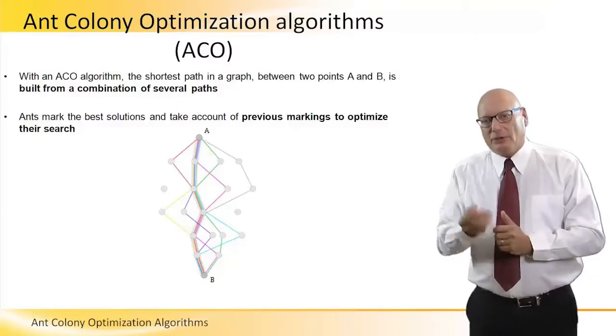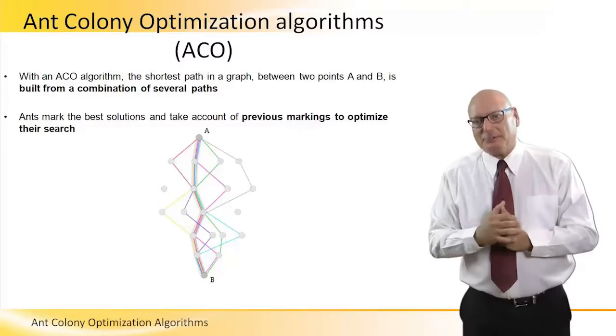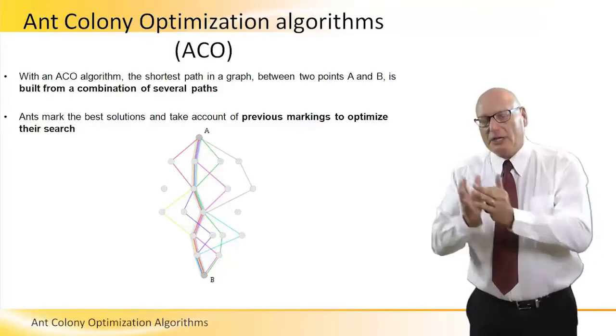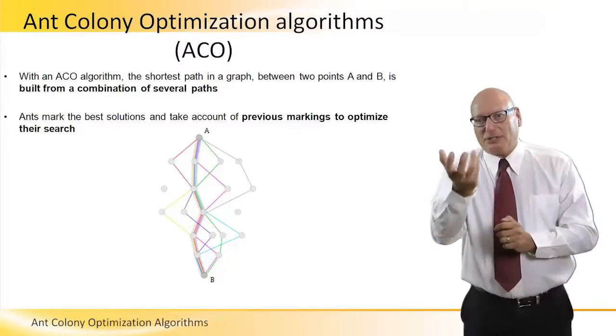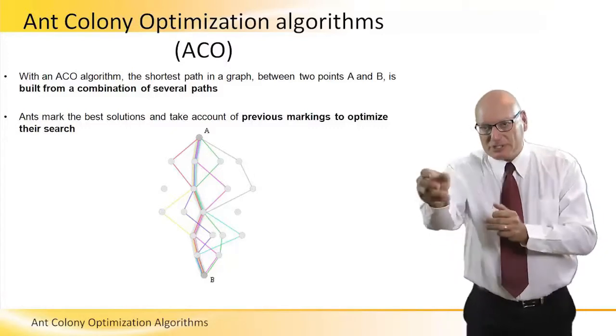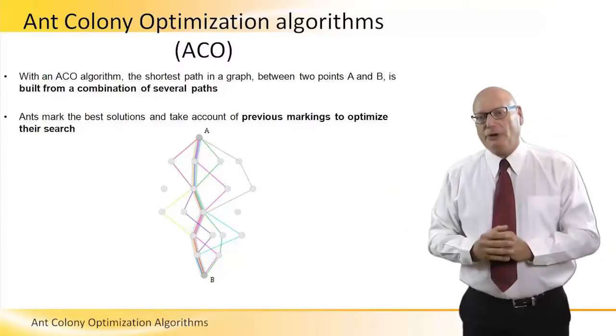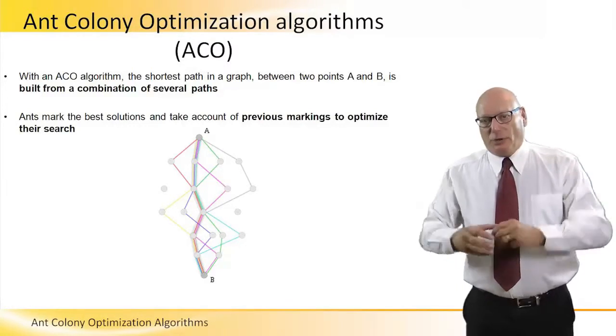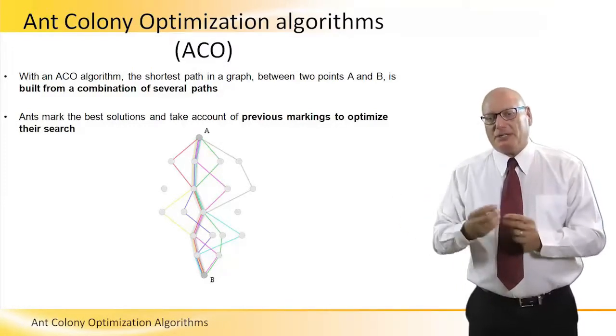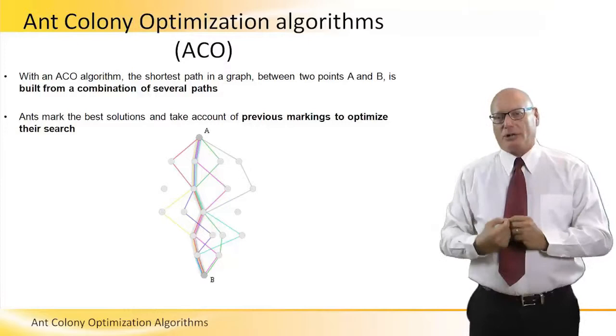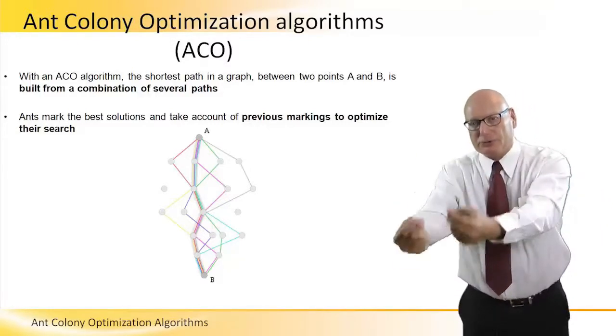Second ant feels that, senses that particular material, knowing that if it's in certain intensity, it means it was very short before the material evaporated. When the material evaporated, means that it took too long from ant number one to go from the nest to the food source and coming back.